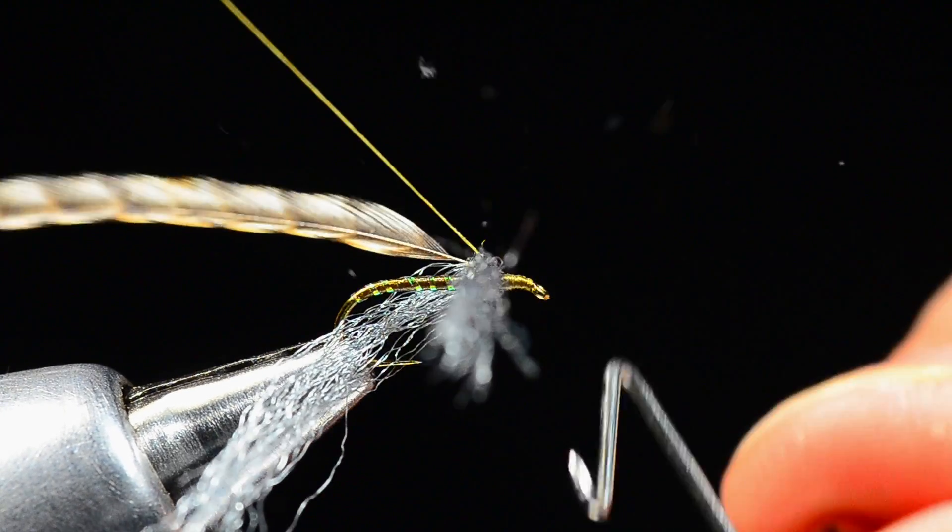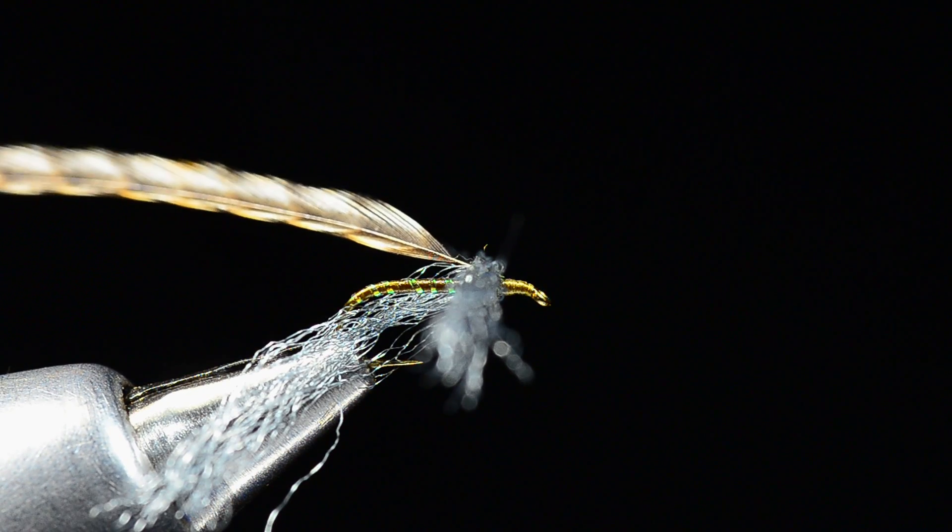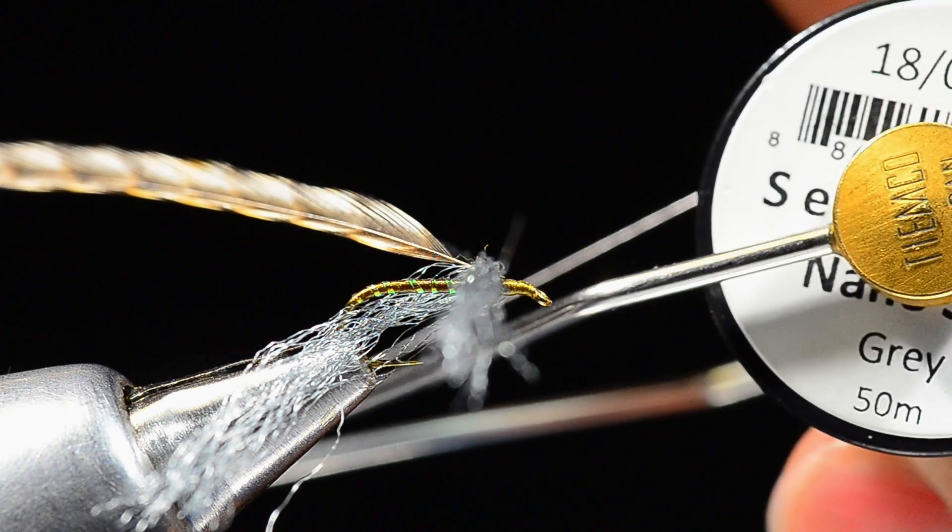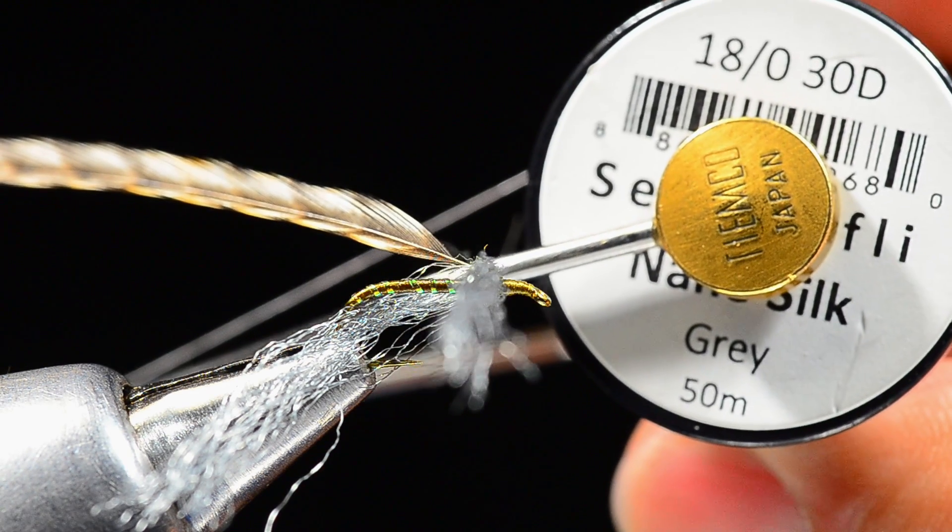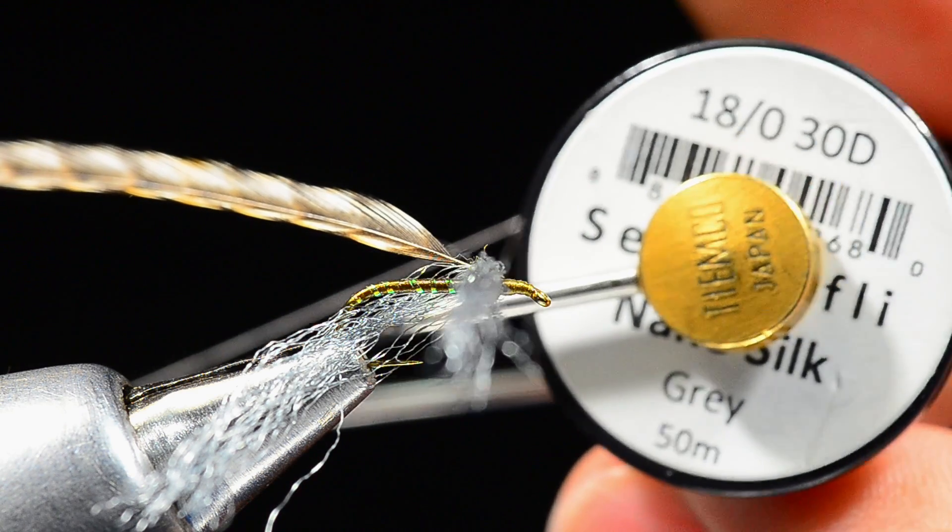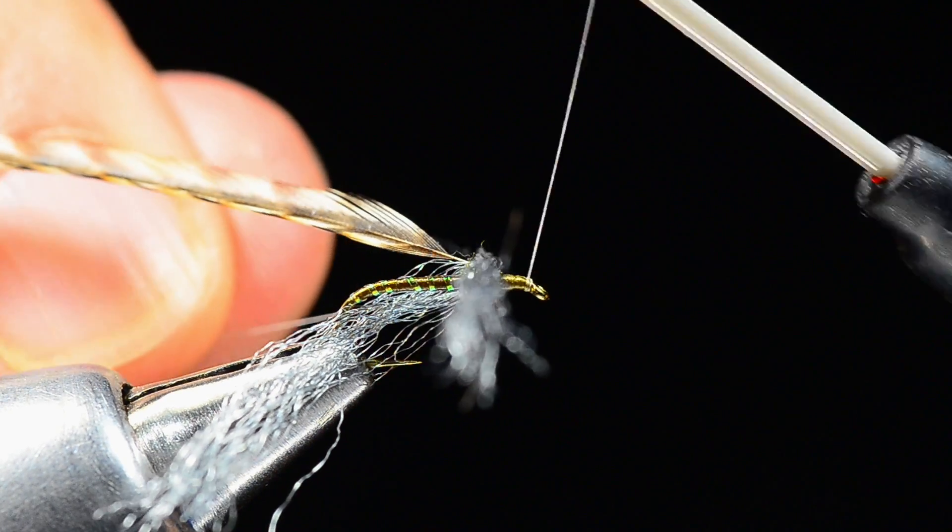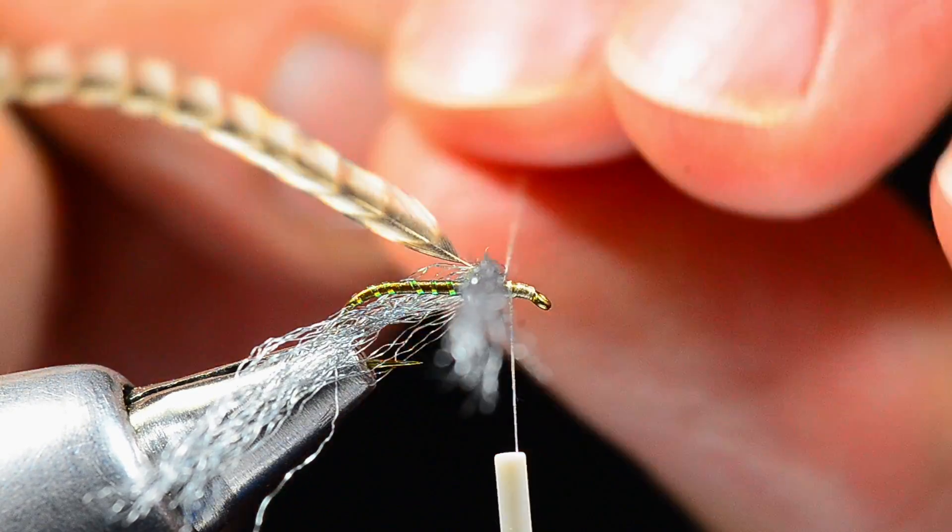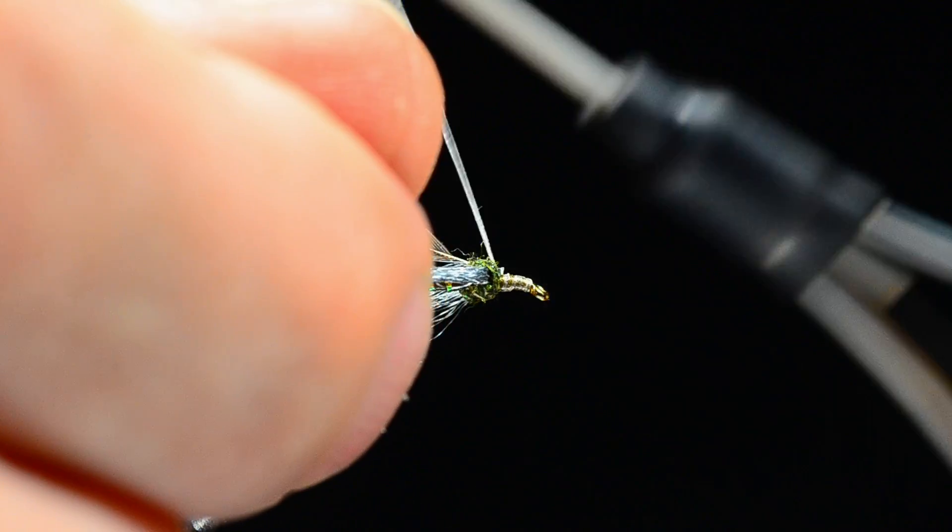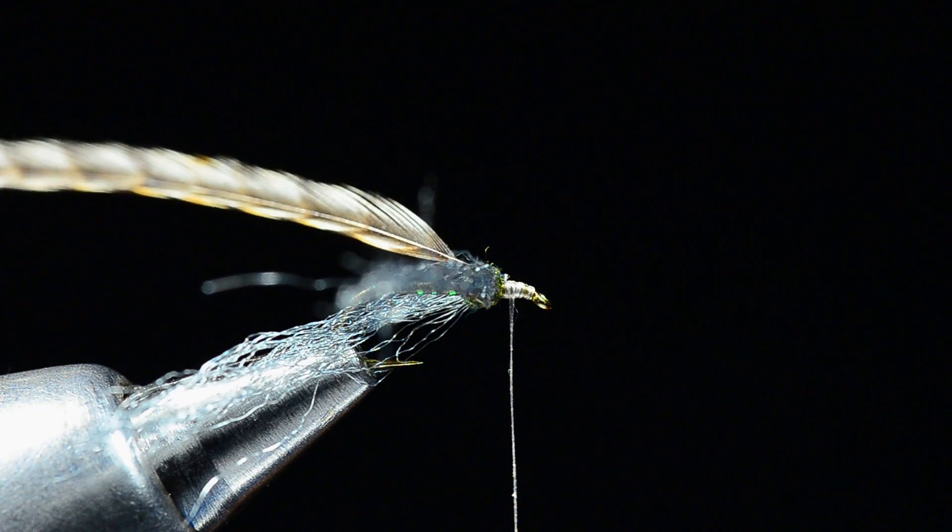Now I'm going to come in with some GSP thread, so this is Semperfli nano silk and this is gray. The color doesn't make a huge difference, it's not going to show much. This is 18 knot so 30 denier, very fine. I found this makes a huge difference in getting that wing anchored in place tightly without a ton of bulk, which is one of the issues here. So I start that thread right over the top of that.